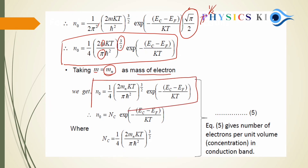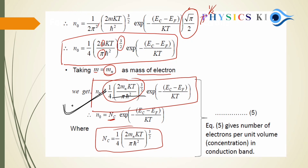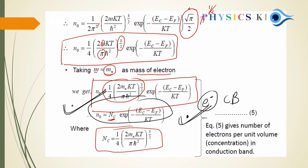The constant terms in the equation are grouped as NC. So the concentration of electrons in the conduction band is N = NC × exp[−(EC − EF)/KT]. It depends on EC, EF, and temperature. This gets 6 out of 6 marks.